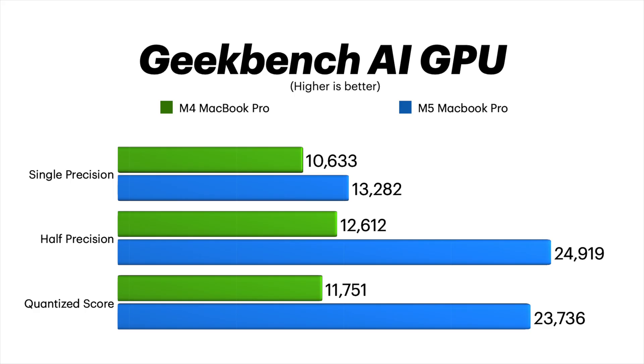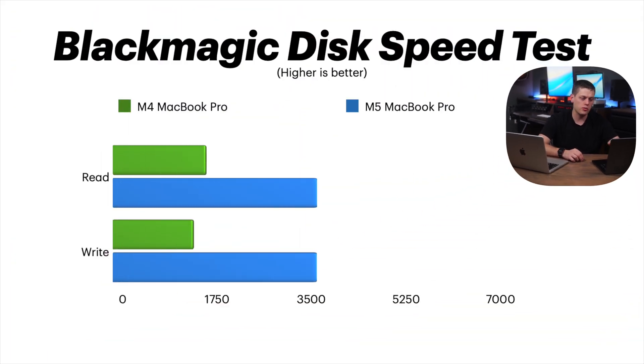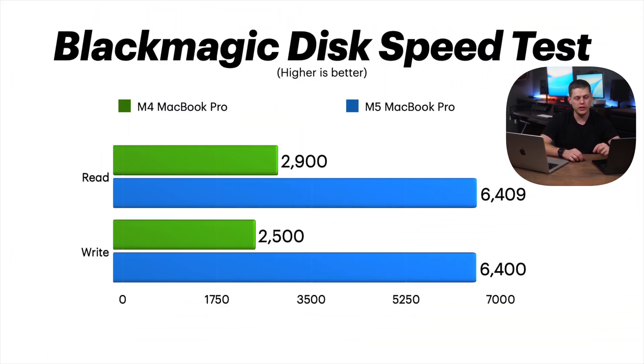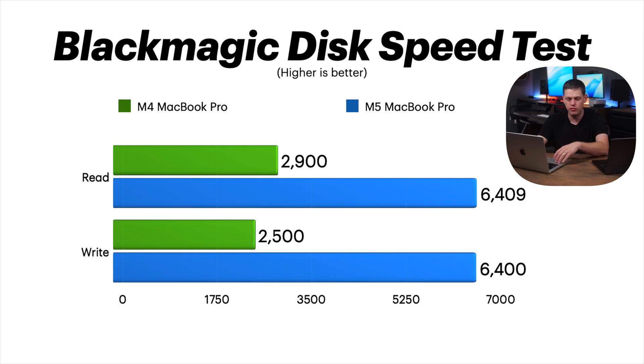One test I was pretty surprised by was the disk speed test. On the M4 I was getting 2,900 megabytes per second on the read and 2,500 on the write. On the M5, I was getting 6,400 megabytes per second on both read and write — over double the SSD speed. This isn't the same as memory bandwidth, but it will lead to performance benefits when moving things around the computer and in day-to-day tasks.